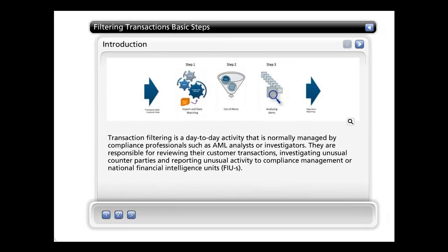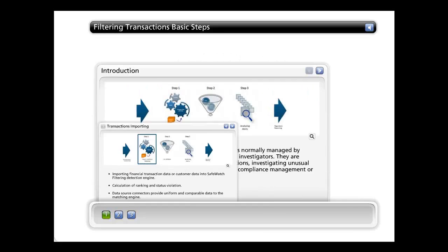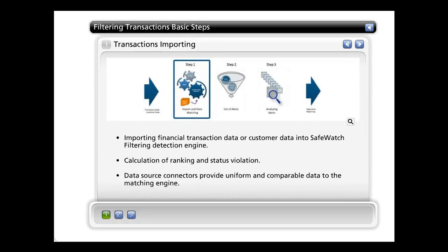Transaction filtering is a day-to-day activity normally managed by compliance professionals such as AML analysts or investigators. They are responsible for reviewing customer transactions, investigating unusual counterparties, and reporting unusual activity to compliance management or National Financial Intelligence Units — FIUs. The process of filtering transactions is very simple and can be broken up into three major steps. First, we import the financial transactions data or customer data into our detection engine and their content is matched with the content of the lists containing the interdict or PEP entries.